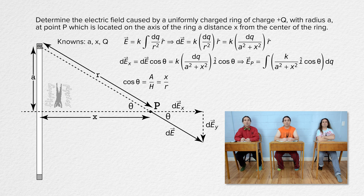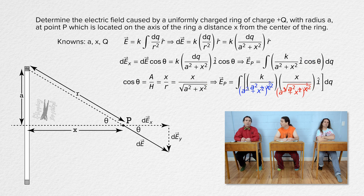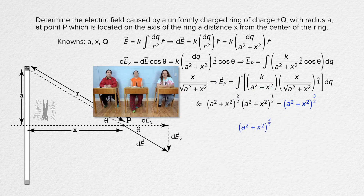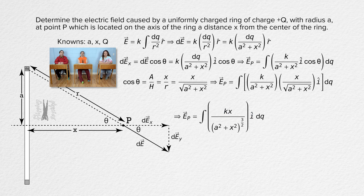Using the Pythagorean theorem, r equals the square root of a squared plus x squared, and we substitute that back into the equation for cosine theta. In the denominator, the quantity a squared plus x squared times the square root of a squared plus x squared equals the quantity a squared plus x squared raised to the three-halves power. At this point, nothing under the integral is a variable — for every dq on the ring, a is constant, x is constant, and the Coulomb constant and unit vector i are constants — so all of that comes out from under the integral.